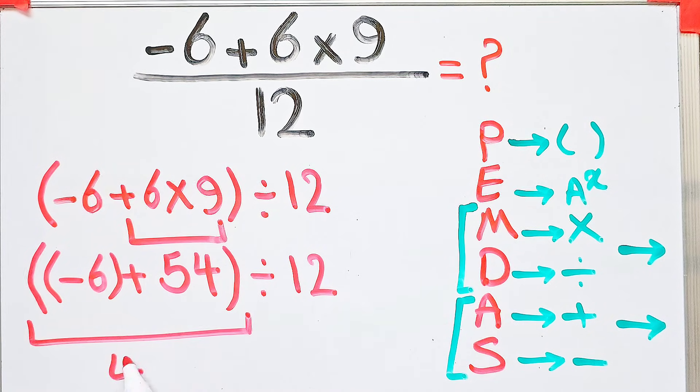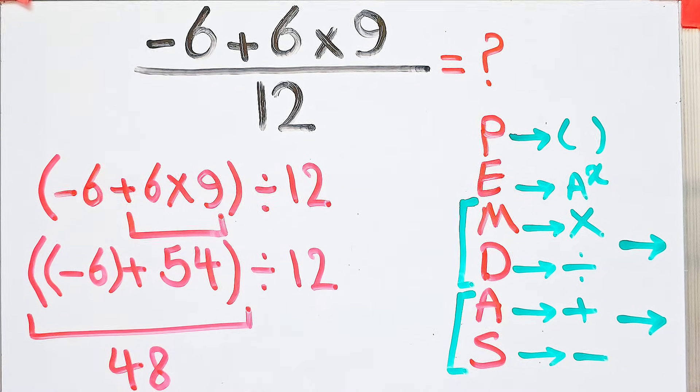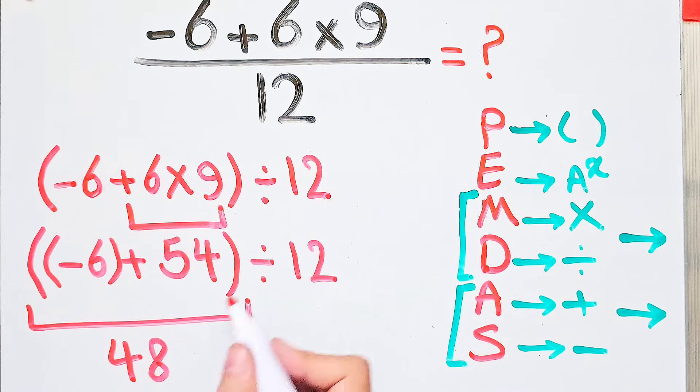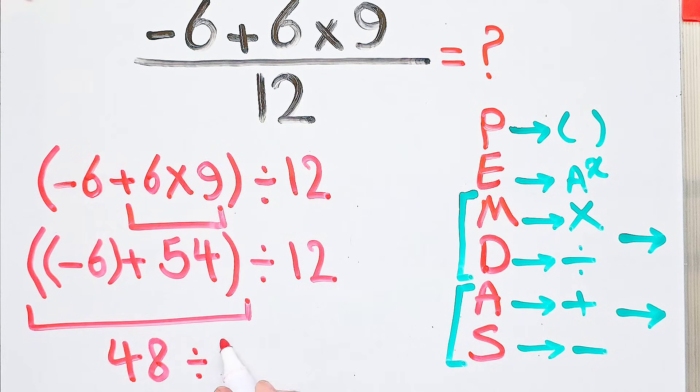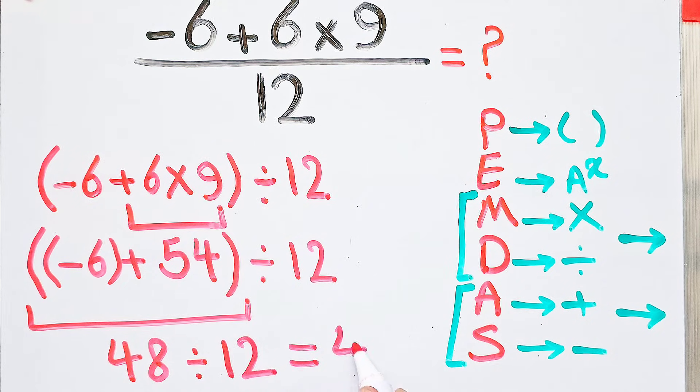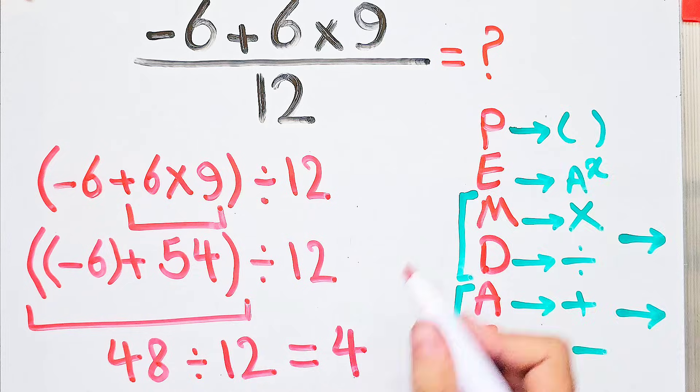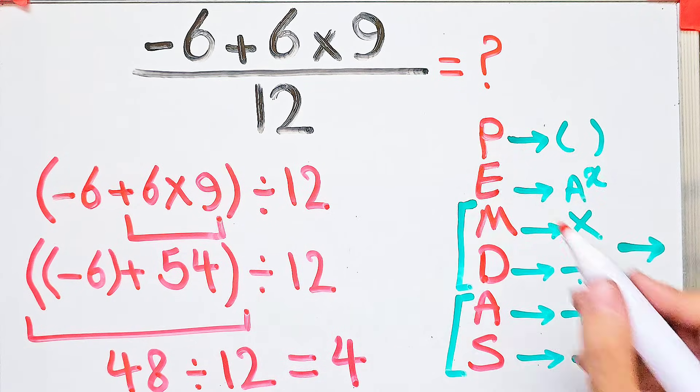Now we have 48 divided by 12. 48 divided by 12 equals 4, and the final answer of this question equals 4. Thanks for watching guys. Please subscribe to the channel and leave a comment. Goodbye guys.